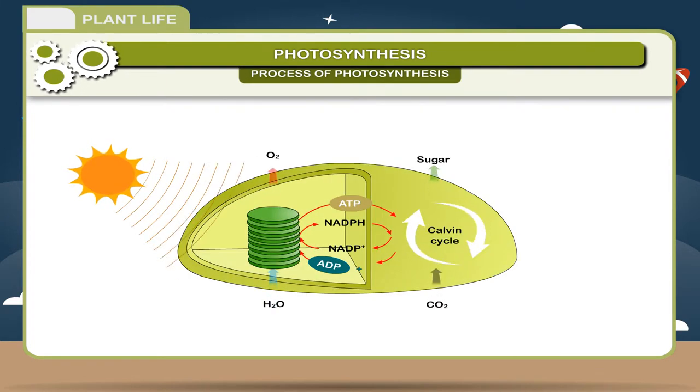Process of photosynthesis is a process which converts light energy to chemical energy. Green plants trap light energy of sun and change it into chemical energy in the form of glucose, carbohydrate.